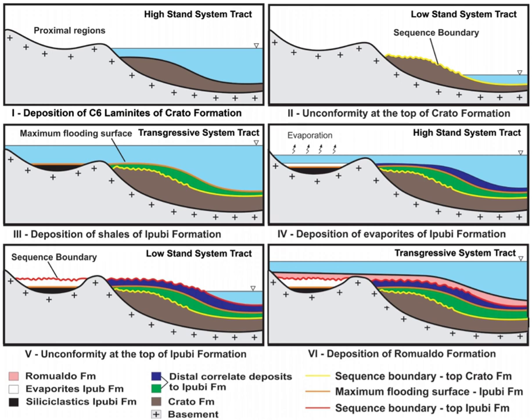In geology, depositional environment or sedimentary environment describes the combination of physical, chemical and biological processes associated with the deposition of a particular type of sediment and, therefore, the rock types that will be formed after lithification, if the sediment is preserved in the rock record. In most cases the environments associated with particular rock types or associations of rock types can be matched to existing analogues.